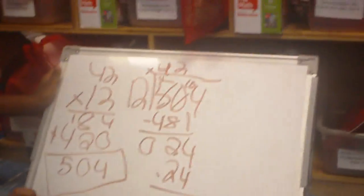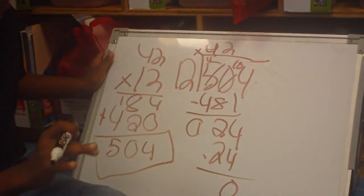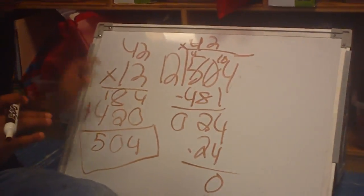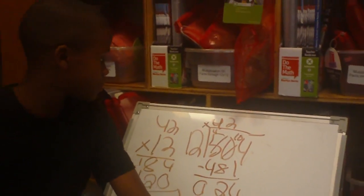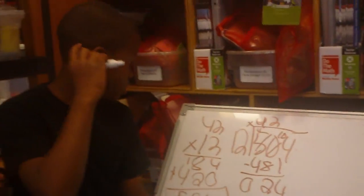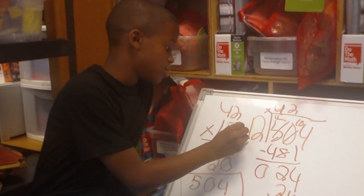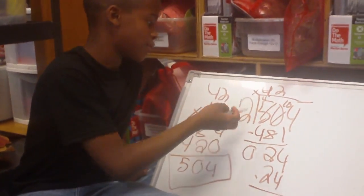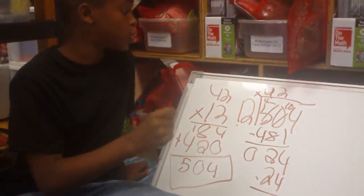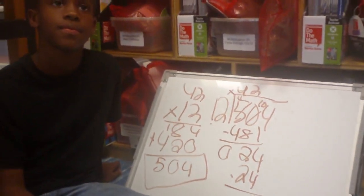That's your answer. So can you explain — what were you dividing? I was dividing... really I was dividing 12. I was doing 504 divided by 12.